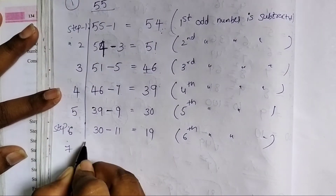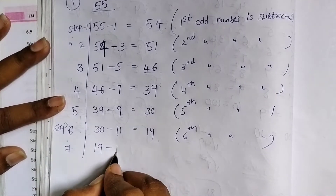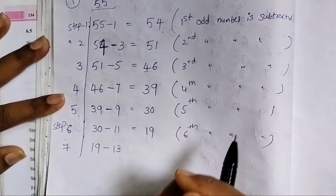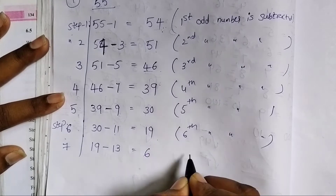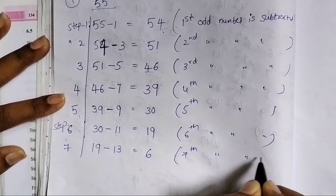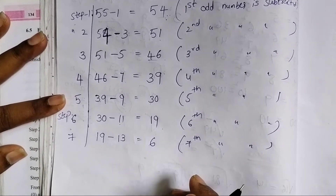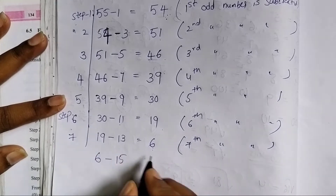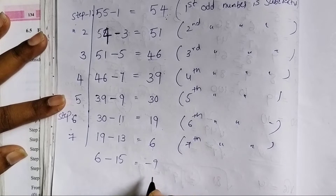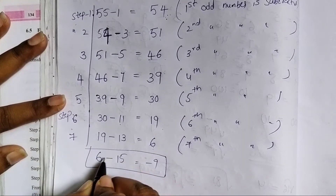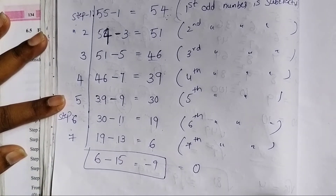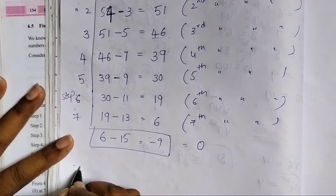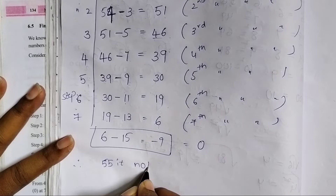Step 7: we have 19 remaining. Subtract the next odd number, 13. The odd numbers are 1, 3, 5, 7, 9, 11, 13. 19 minus 13 equals 6. Since 6 remains and is not zero, 55 is not a perfect square number.